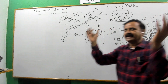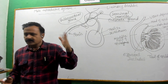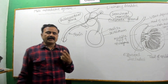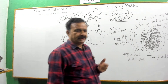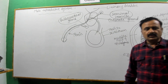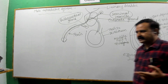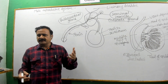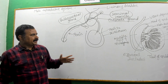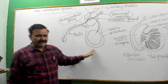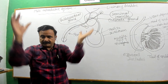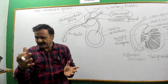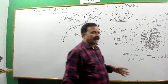Inside the scrotum there are two testes, each having a diameter of approximately three to four centimeters. These two testes are present outside the body of the male.